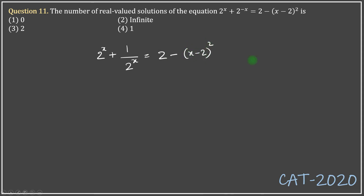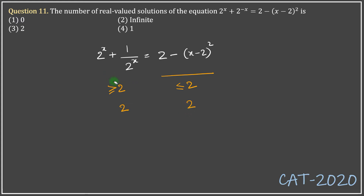The entire question rests on a simple fact: the left-hand side expression will always yield a value greater than or equal to 2, and the right-hand side expression will always yield a value less than or equal to 2. They can be equal in only one case — when the left-hand side is exactly 2 and the right-hand side is also exactly 2 — but that will not happen simultaneously for any single value of x.